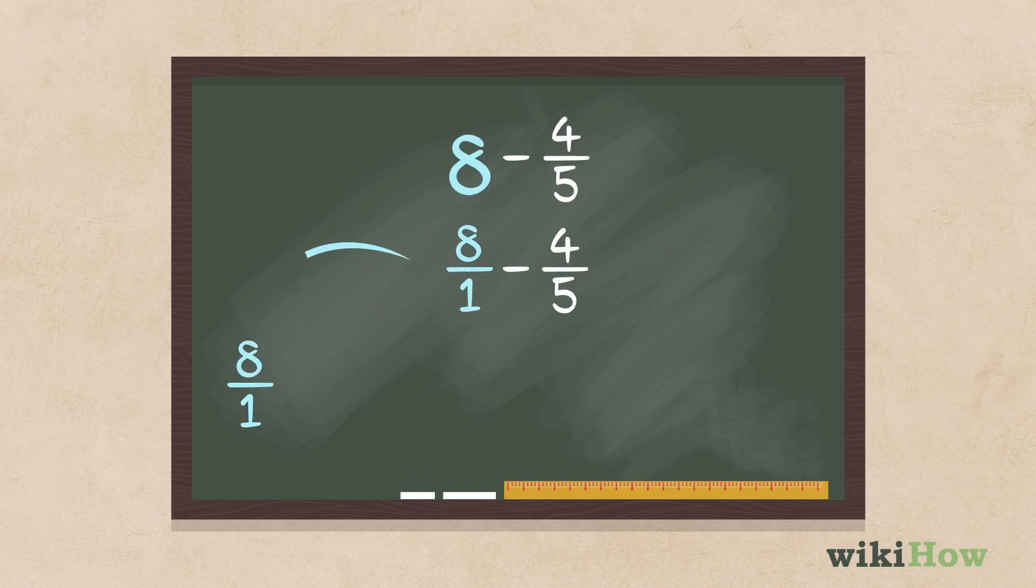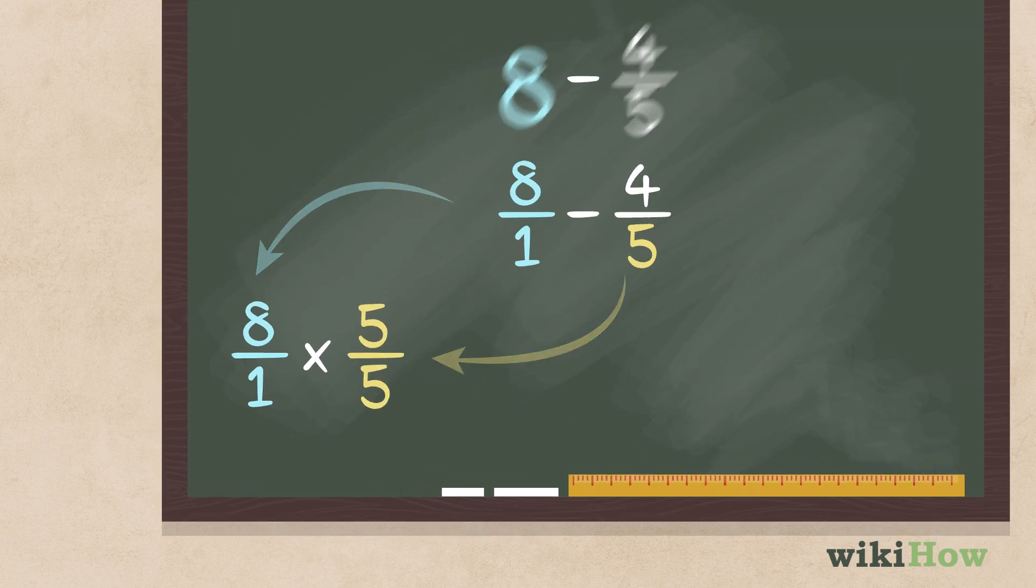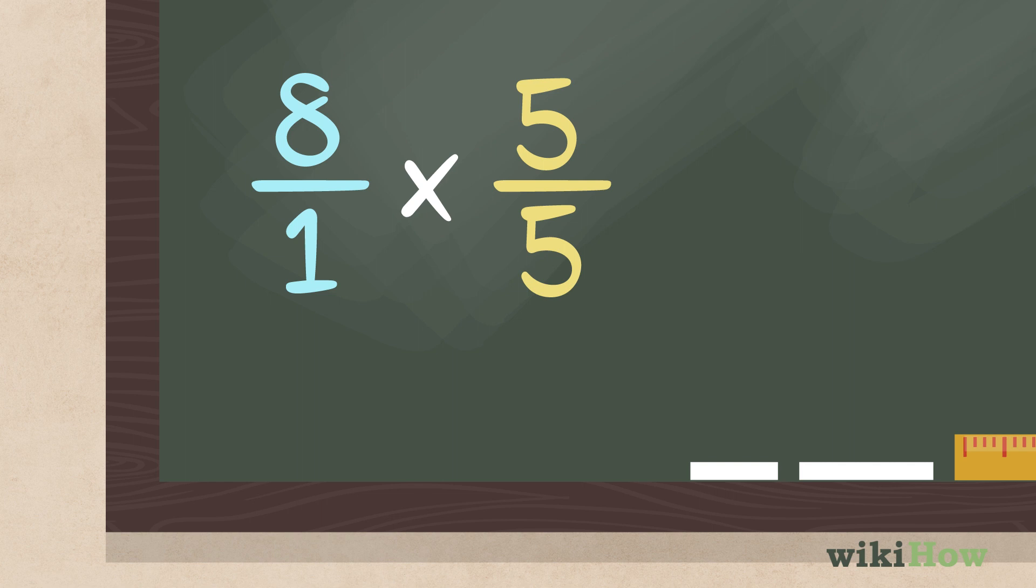Next, multiply the new fraction's numerator and denominator by the denominator of the fraction that you're subtracting. In our example, you'd multiply 8 over 1 by 5 to get 40 over 5.